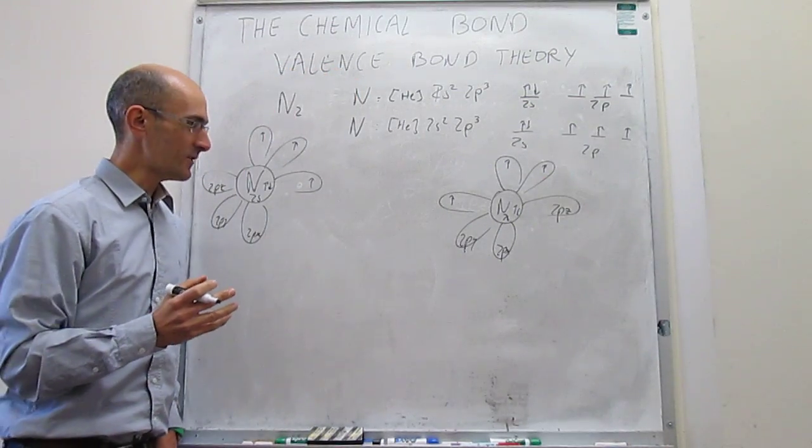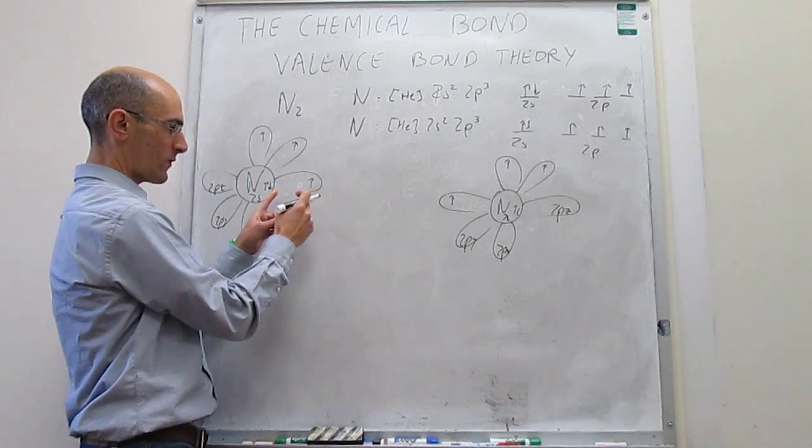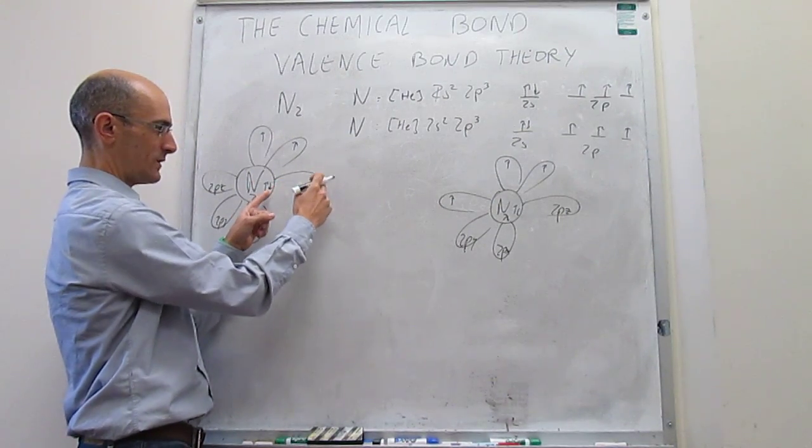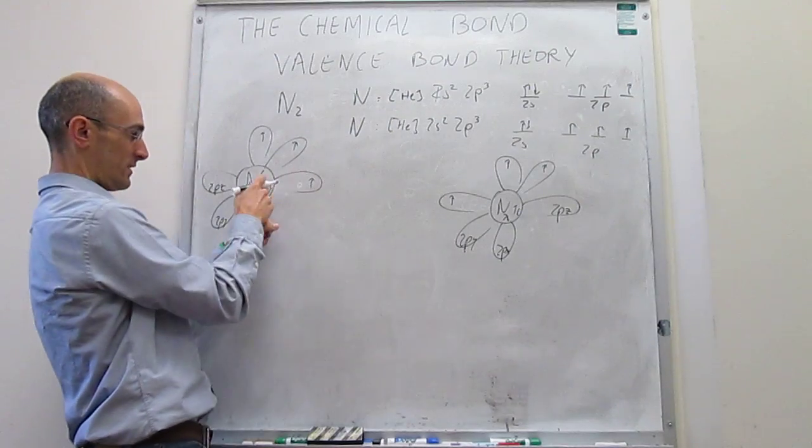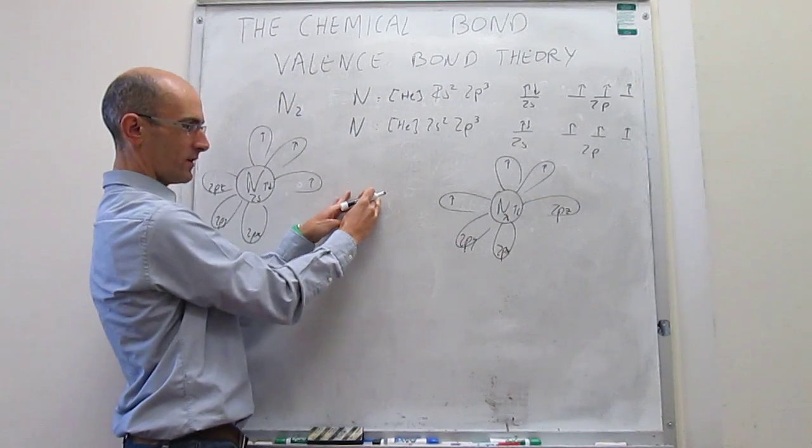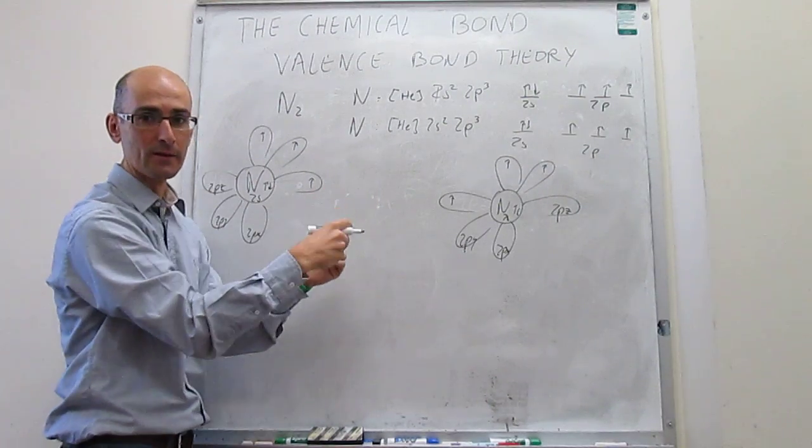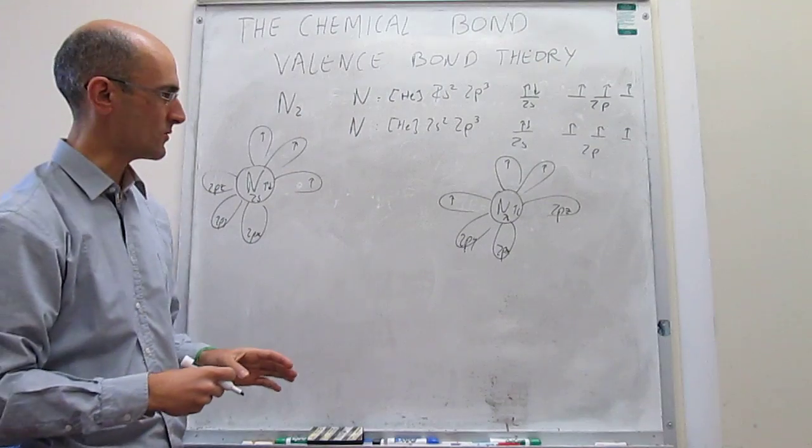We can start again to envision how the overlaps are going to take place. When we bring these two atoms together, it looks like you're going to have an overlap between the 2pz, which is this orbital, and the 2pz, which is that orbital. And those electrons can form a bond, but the spins have to be antiparallel, according to Pauli exclusion principle.